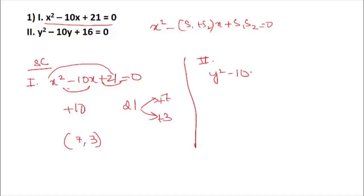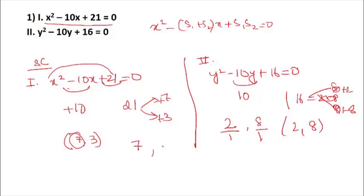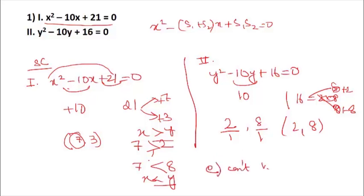For the second equation y² − 10y + 16 = 0: take the negative of the middle coefficient as 10, then break 16 into 2 and 8 (since 2 × 8 = 16 and 2 + 8 = 10). So y = 2 and y = 8. Now comparing: if x = 7 and y = 2 then x > y, but if x = 7 and y = 8 then x < y. No definite relation — answer is 'can't be determined'.